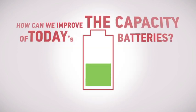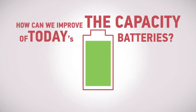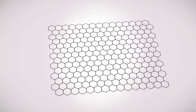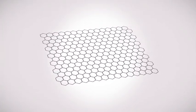So, how can we improve the capacity of today's batteries? The answer is graphene, a Nobel Prize-winning material made from one atomic layer of graphite.